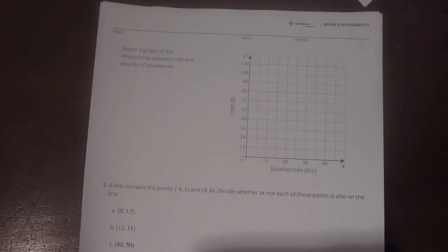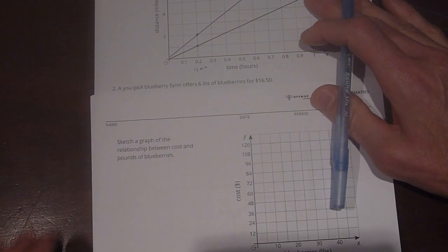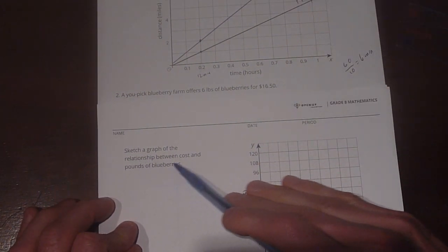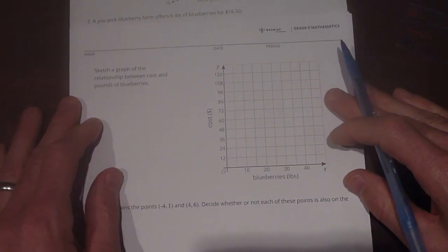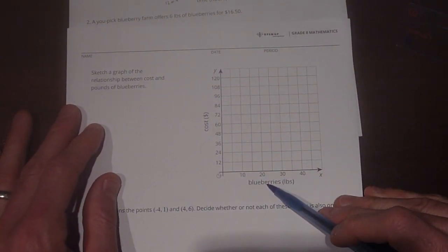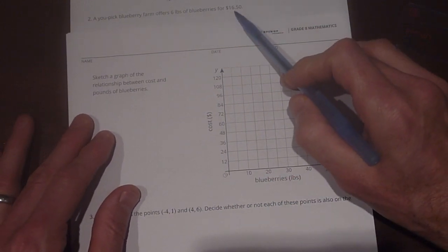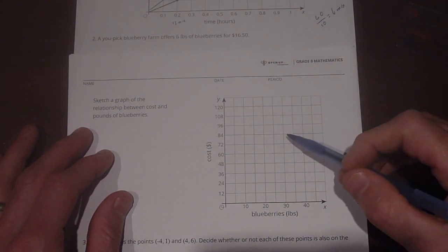Number 2 says a you-pick blueberry farm offers 6 pounds of blueberries for $16.50. Sketch the graph of the relationship between cost and pounds of blueberries. Okay. So here on the graph, we have blueberries in pounds and cost in dollars. Well, we know that it costs $16.50 for 6 pounds of blueberries.